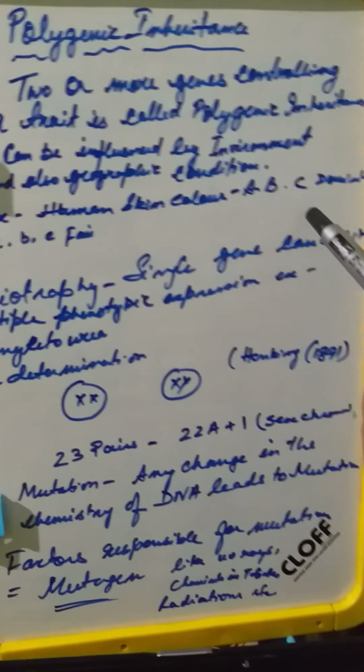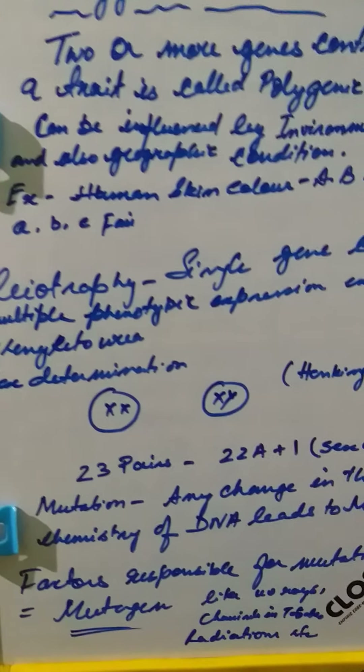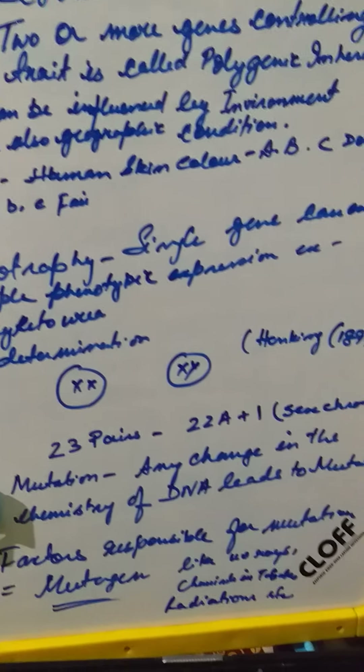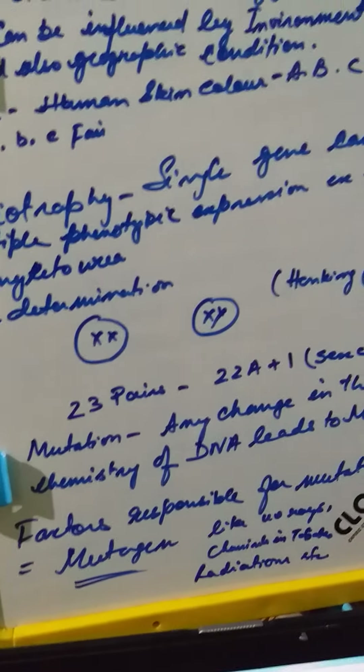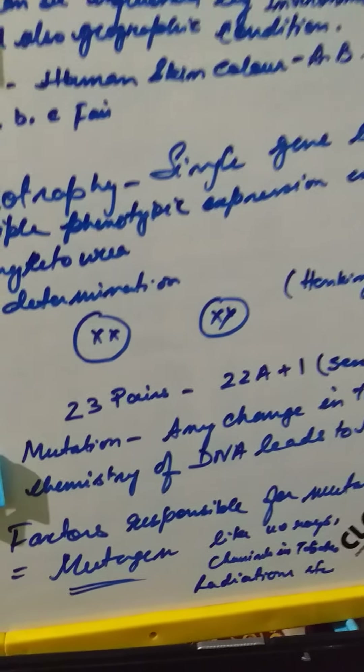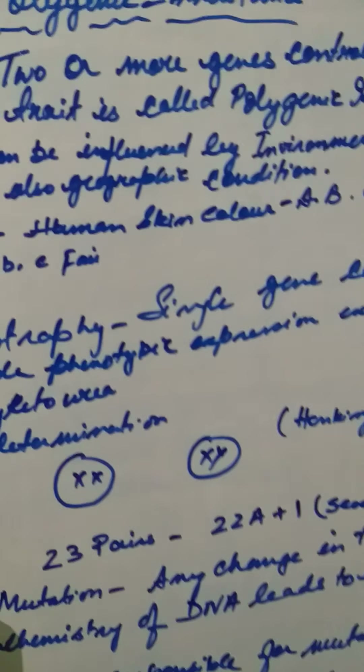So skin color varies from capital A to the recessive form, and this variation can be explained by genetic conditions.